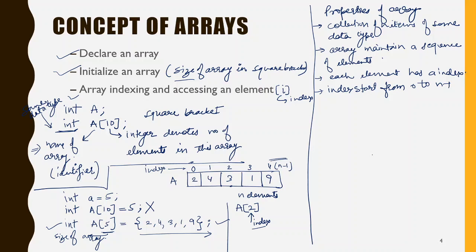Now let us see how to access an array element. If you want to access the element at index 2, you write A[2]. The integer written inside the square bracket here is the index. So A[2] is equivalent to the value 3. If you want to access 9, you write A[4]. Note that in the declaration and initialization part, the integer in the square bracket is the size of the array, but everywhere else in the program, an integer in square brackets is treated as an index.